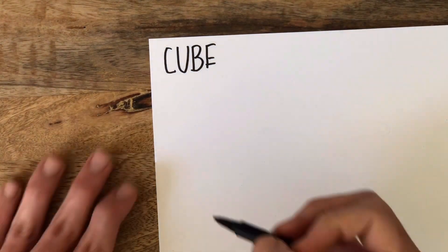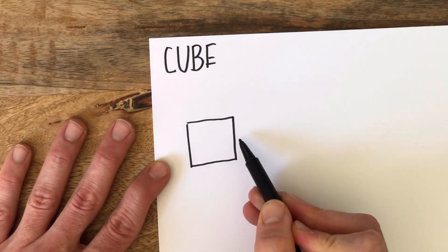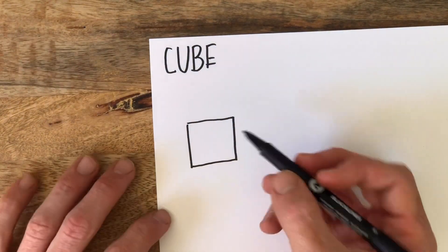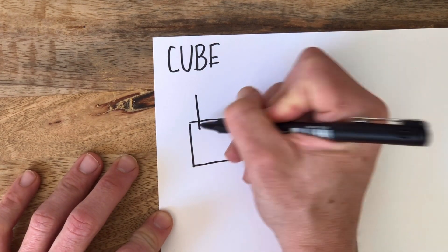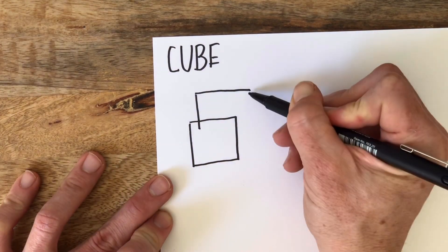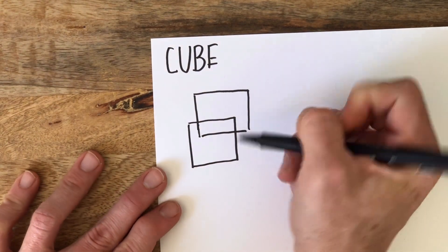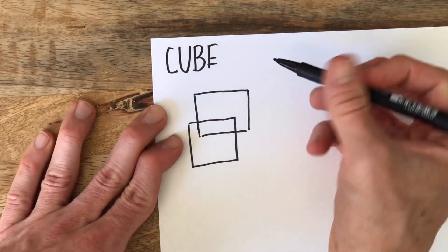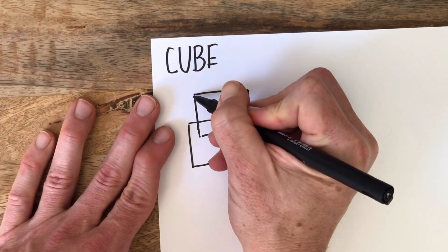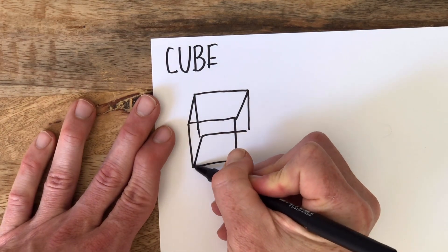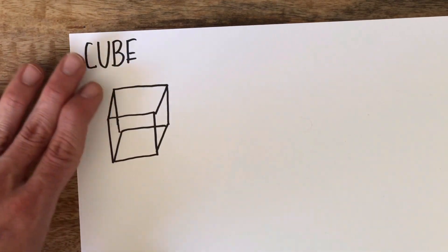To draw a cube, the first thing I want you to do is make a square — and we know it's a square because it has four equal sides, same same same same. Now I'm going to go up and over, making another square up and over. A corner is where two lines meet at a sharp little point. I'm going to take a line, start at one corner, and go to the next corner — same over here, same over here, same over here. I have four corners. This is my cube.